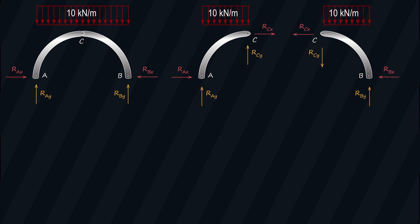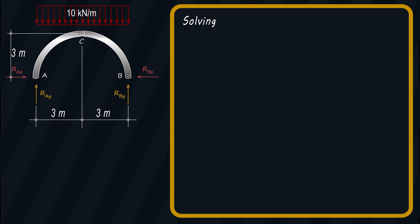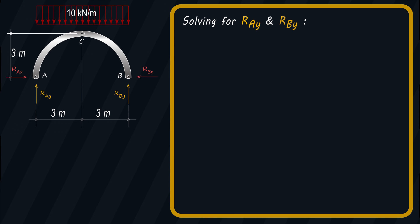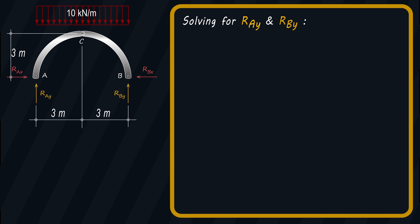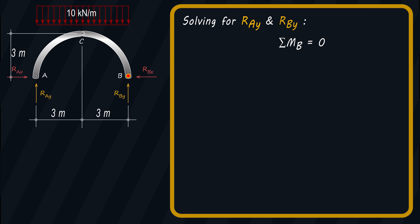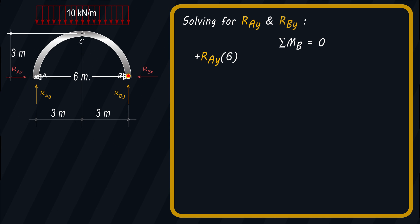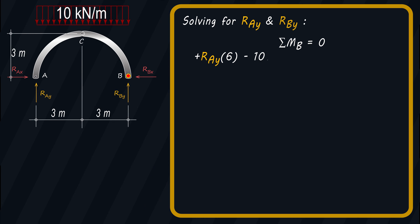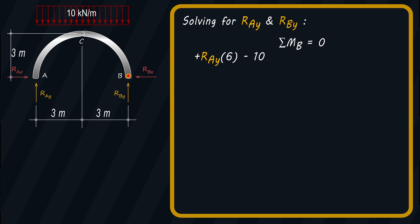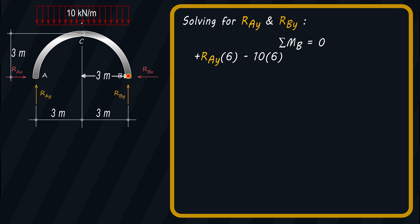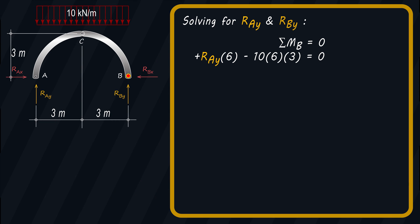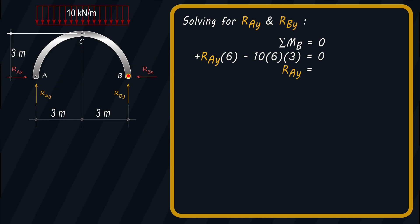Using the free body diagram for the whole structure, we will solve for the values of RAY and RBY using the static equilibrium equation. Summing the moment at point B, which should be equal to zero, and taking the clockwise moment as positive, we have: RAY times 6 minus 10 times 6 times 3 equals zero. Solving for RAY, the result is equal to 30 kN.